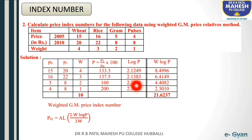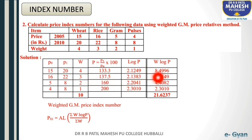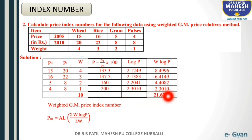Multiply W by log P: 4 into 2.1249 is 8.4996; 3 into 2.1383 is 6.4149; 2 into 2.2041 is 4.4082; 1 into 2.3010 is 2.3010. After adding these values, summation W log P is 21.6237.